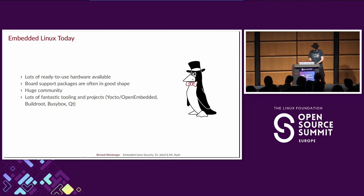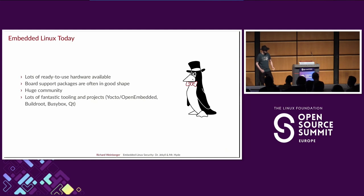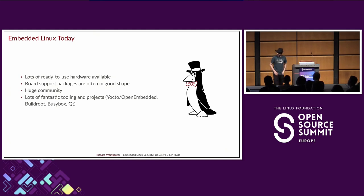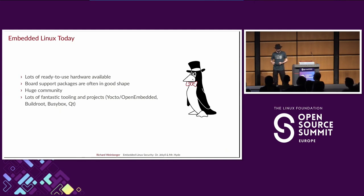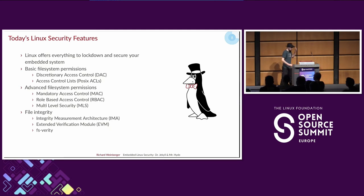Embedded Linux today is actually in really good shape. We have a lot of ready-to-use hardware available — Raspberry Pi, BeagleBones. You can go to various companies, get a ready-to-use board, and start creating your product. The BSP packages are getting much better too. 15 years ago the situation with BSP packages was really bad, but these days you can get from most vendors a good BSP that's not so far away from mainline. The community is huge, you can get help, and we have many cool projects: Yocto, Buildroot, Qt — all nice projects. You can build really great products using Linux.